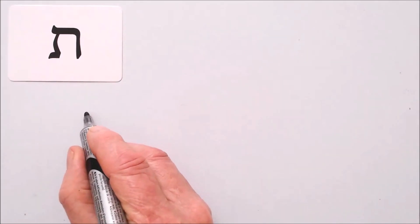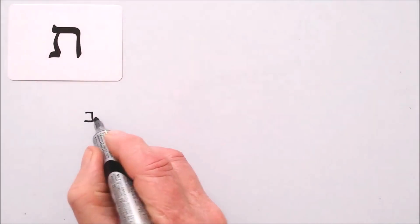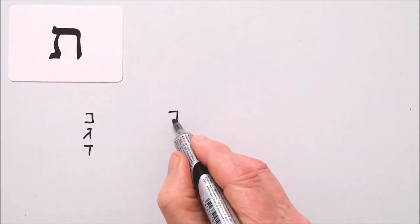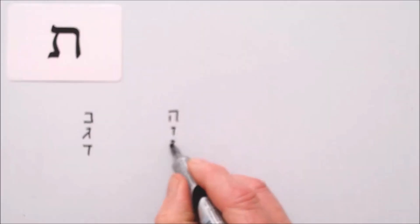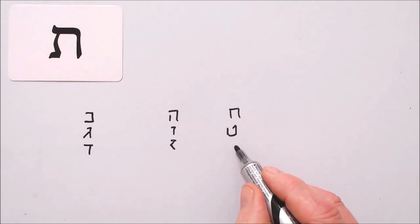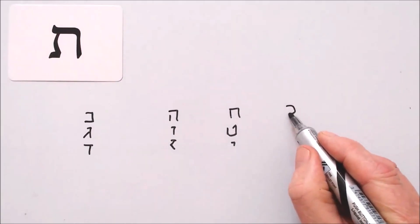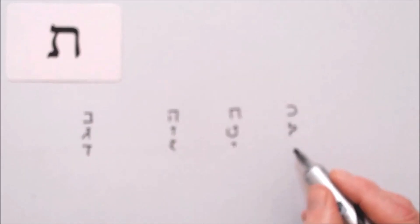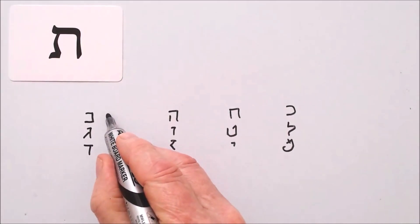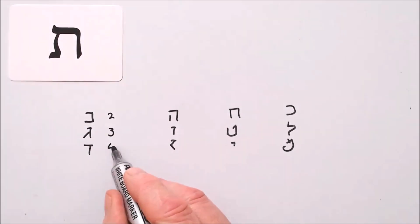And he does this. I'll write down the groups of three first. We won't do them all, but we'll do certain ones. Now, these are the numeric values of these letters, and he adds them up. Bait is two, Gimel is three, Dalit is four. Add them up. Two plus three is five, plus four is nine. The digit sum is nine.